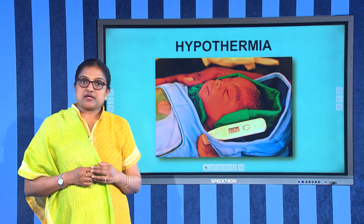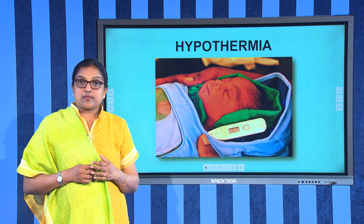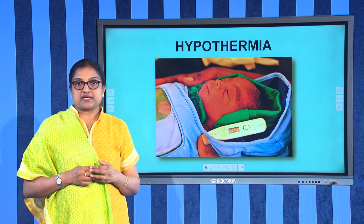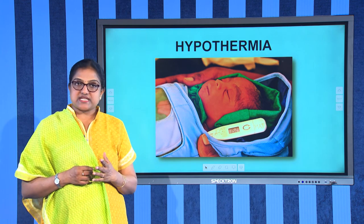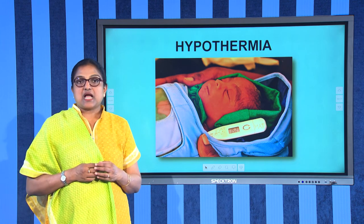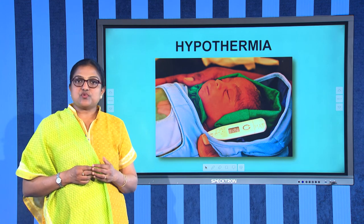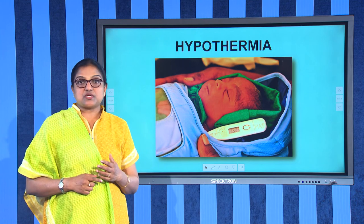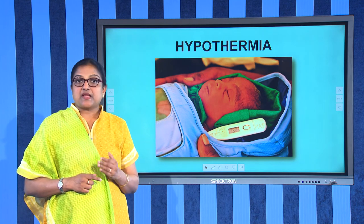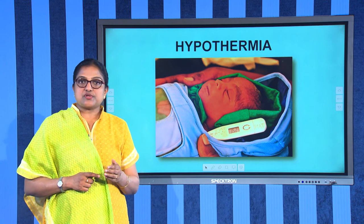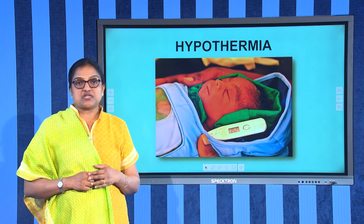Hypothermia results when the body temperature drops below 35 degrees Celsius. Small babies are particularly at risk. It can also be caused by lengthy immersion in cold water or by not being dressed warmly enough in cold weather. Symptoms include cold, pale, dry skin, shivering, clumsy movements, slurred speech, and gradual unconsciousness. It is best to rewarm someone with hypothermia at the same speed at which they cooled down.